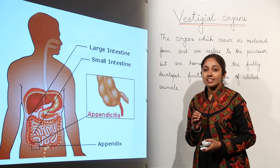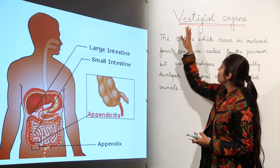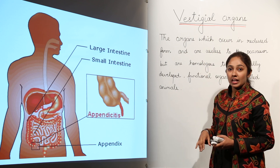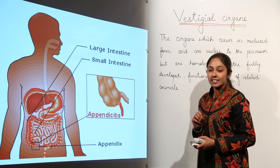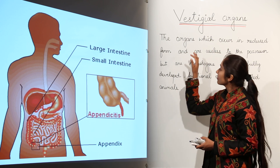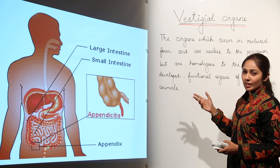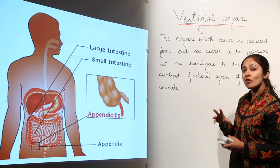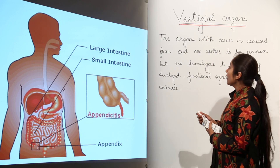Let's move on to the next evidence of evolution: vestigial organs. Before giving examples, let us see what vestigial organs convey and how we define them.